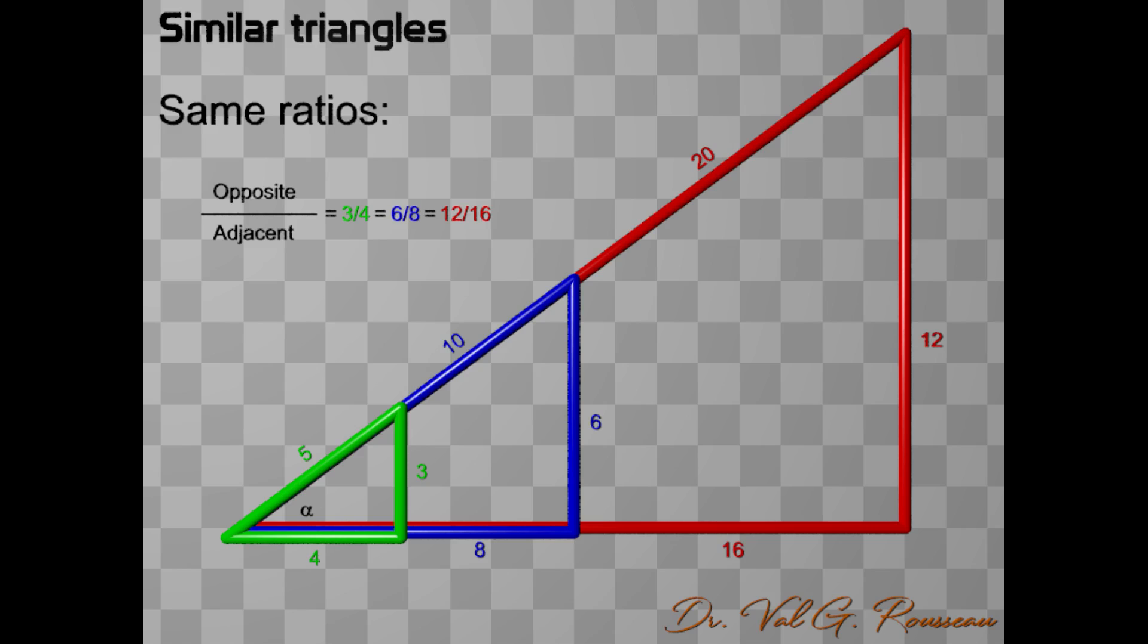So, let us keep in mind that if we don't change the angle alpha, the ratios between adjacent side, opposite side and hypotenuse don't change either. And vice versa. If we don't change the ratios, then the angle alpha doesn't change.